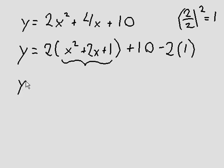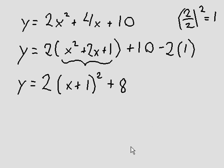So now, I have a perfect square trinomial that will factor into x plus 1 squared. Because 2 numbers that multiply to 1 and add up to 2 will be 1 and 1. 10 minus 2 times 1. 2 times 1 is 2. 10 minus 2 is 8.